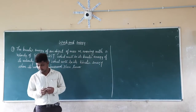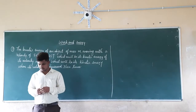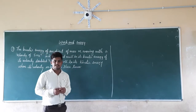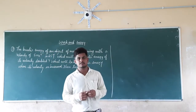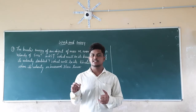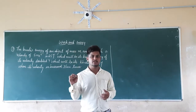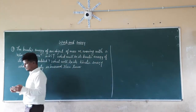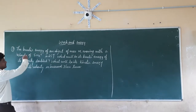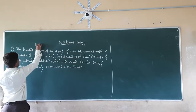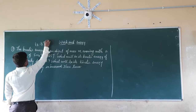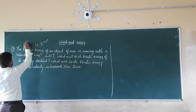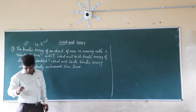The second question is: write an expression for the kinetic energy of an object. The mathematical expression for kinetic energy is EK = ½mv². That is the answer to the second question, which is given in the textbook exercise.